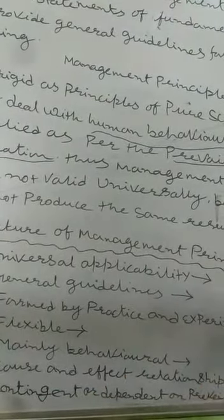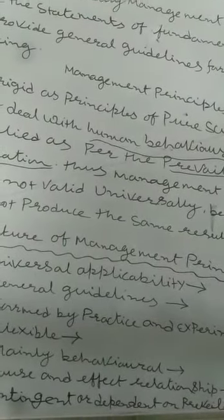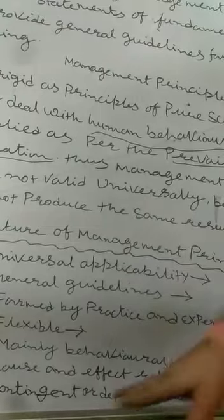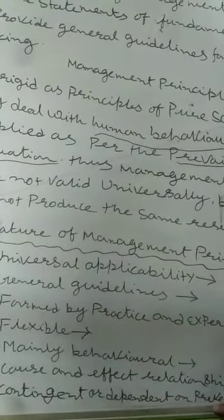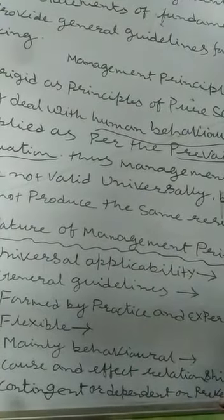Next is Contingent, meaning management principles are dependent on the prevailing situation. Management principles mainly depend on the prevailing situation — how we manage depends on what the situation is, and we apply management principles accordingly to get results. This covers the first and second topics of Chapter 2. Make notes on this. If there is any problem or question, you must ask via the WhatsApp number provided to you. That's all.